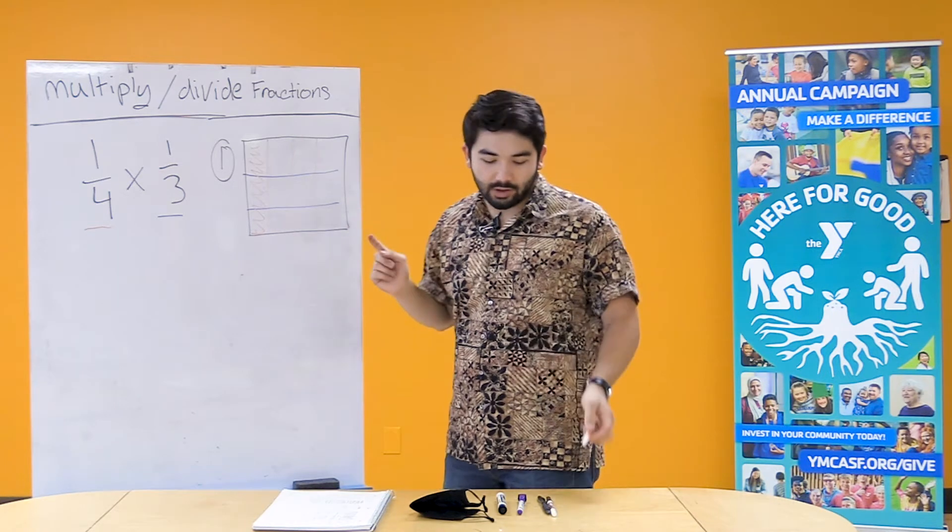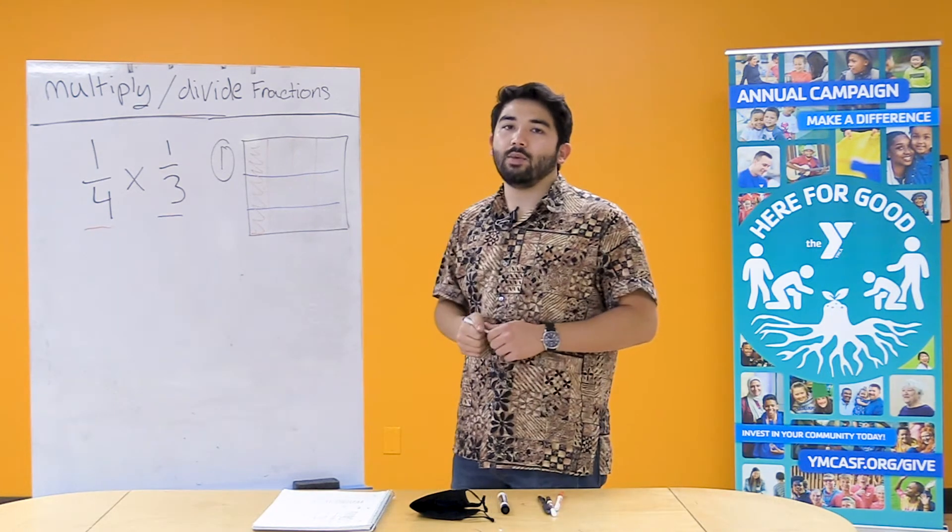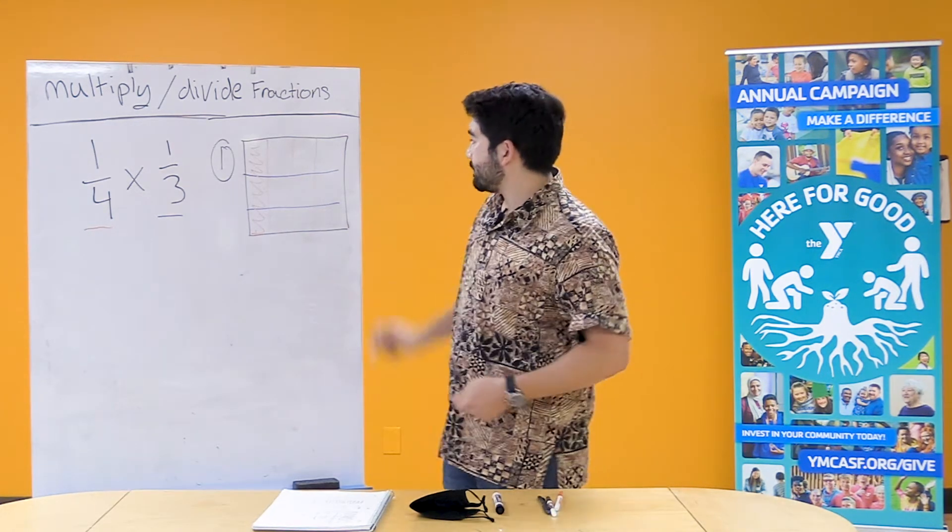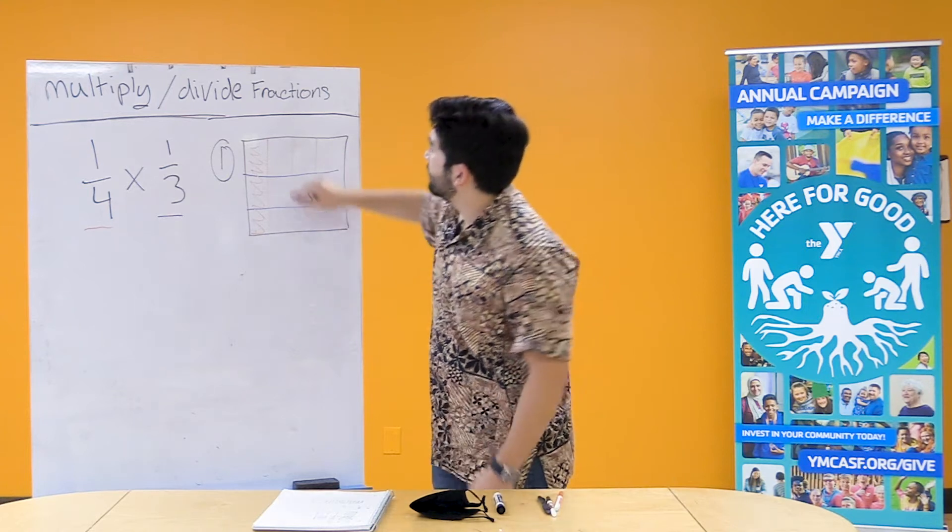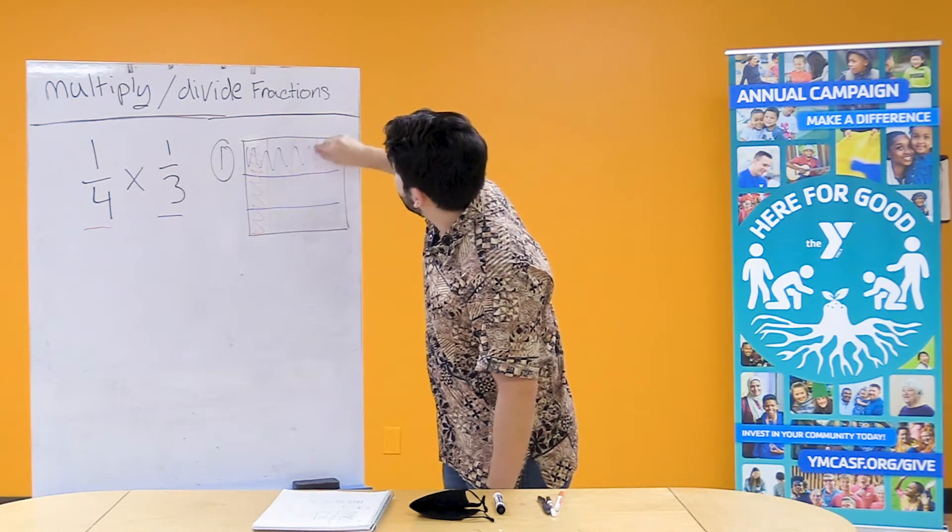Okay, so now we have our 1/4 on the board. I'm gonna do the same with 1/3. So we have 1, 2, 3. Just gonna shade in one of these three.